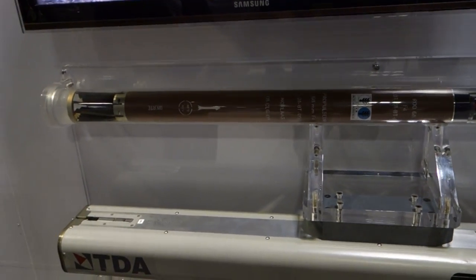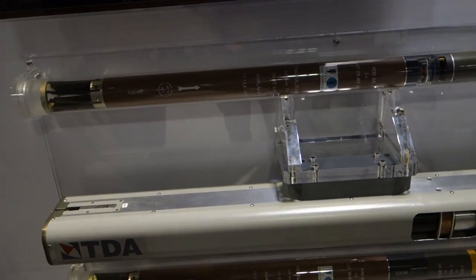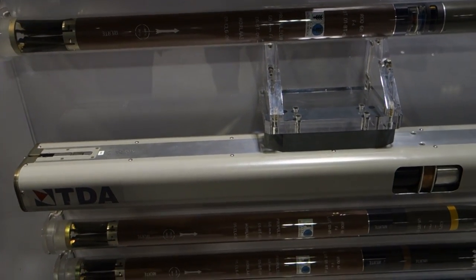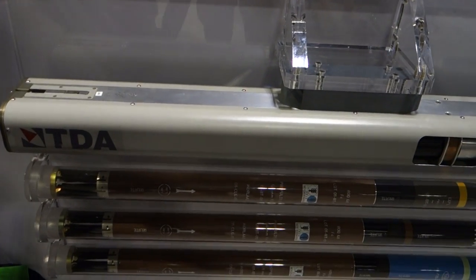All right, you're watching defensereview.com. I'm here with Matthew Khoury of Thales, and he's going to show us this very cool 70 millimeter rocket system of which there are different rocket types, but the main thing about this is essentially it's wireless. So let's take us through it.